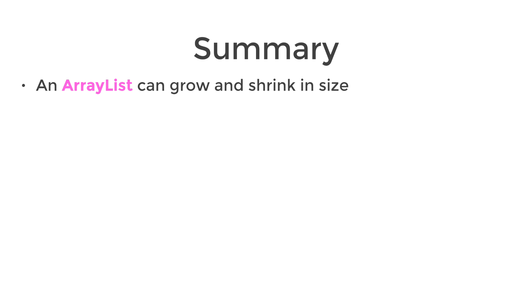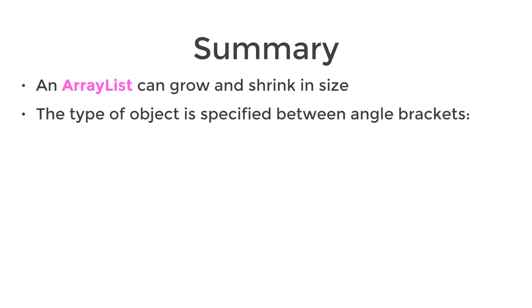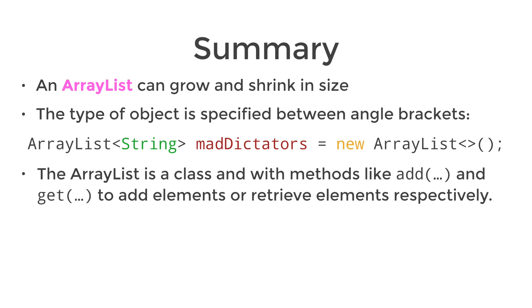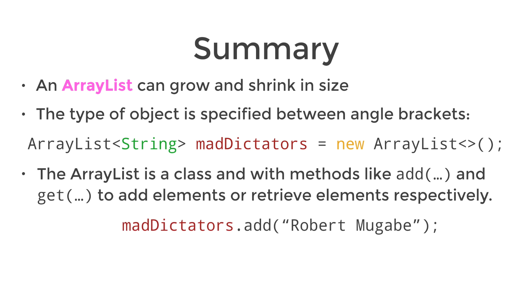An array list, on the other hand, can grow and shrink in size in contrast to the array, and the type of object stored in the array list is specified between the angle brackets. The array list also has a bunch of methods we can call on it, like add or get, to add elements or retrieve elements respectively.